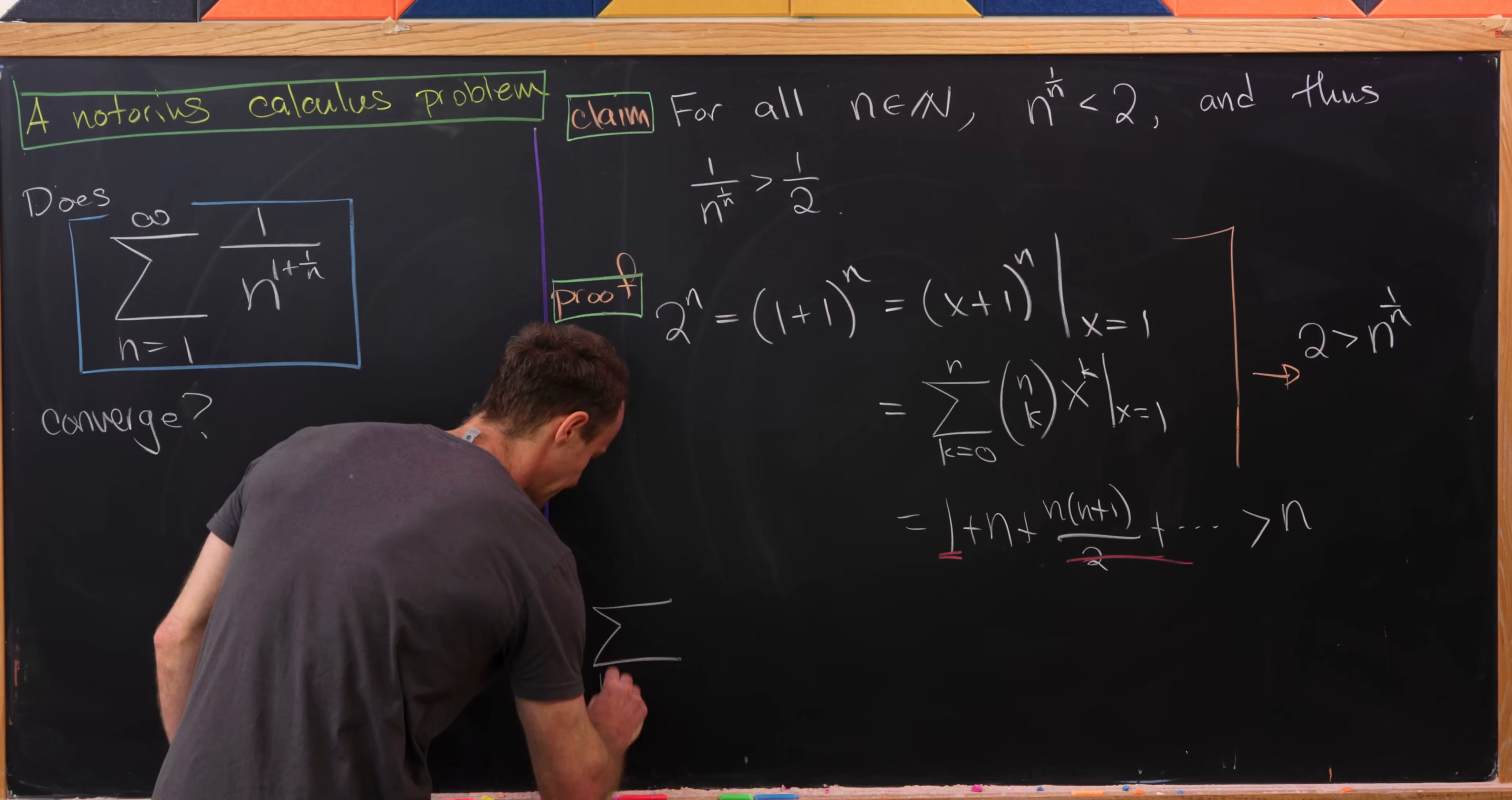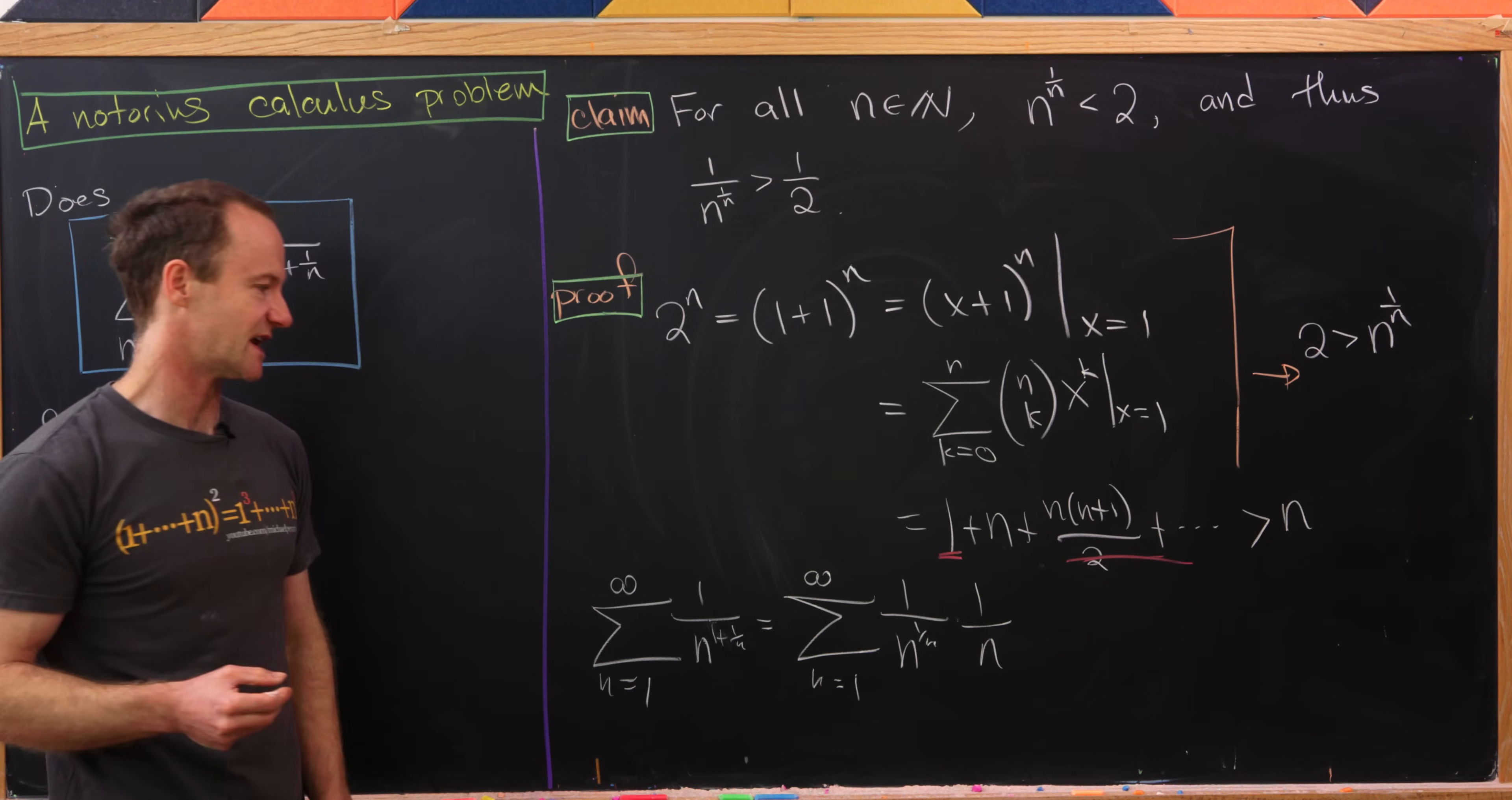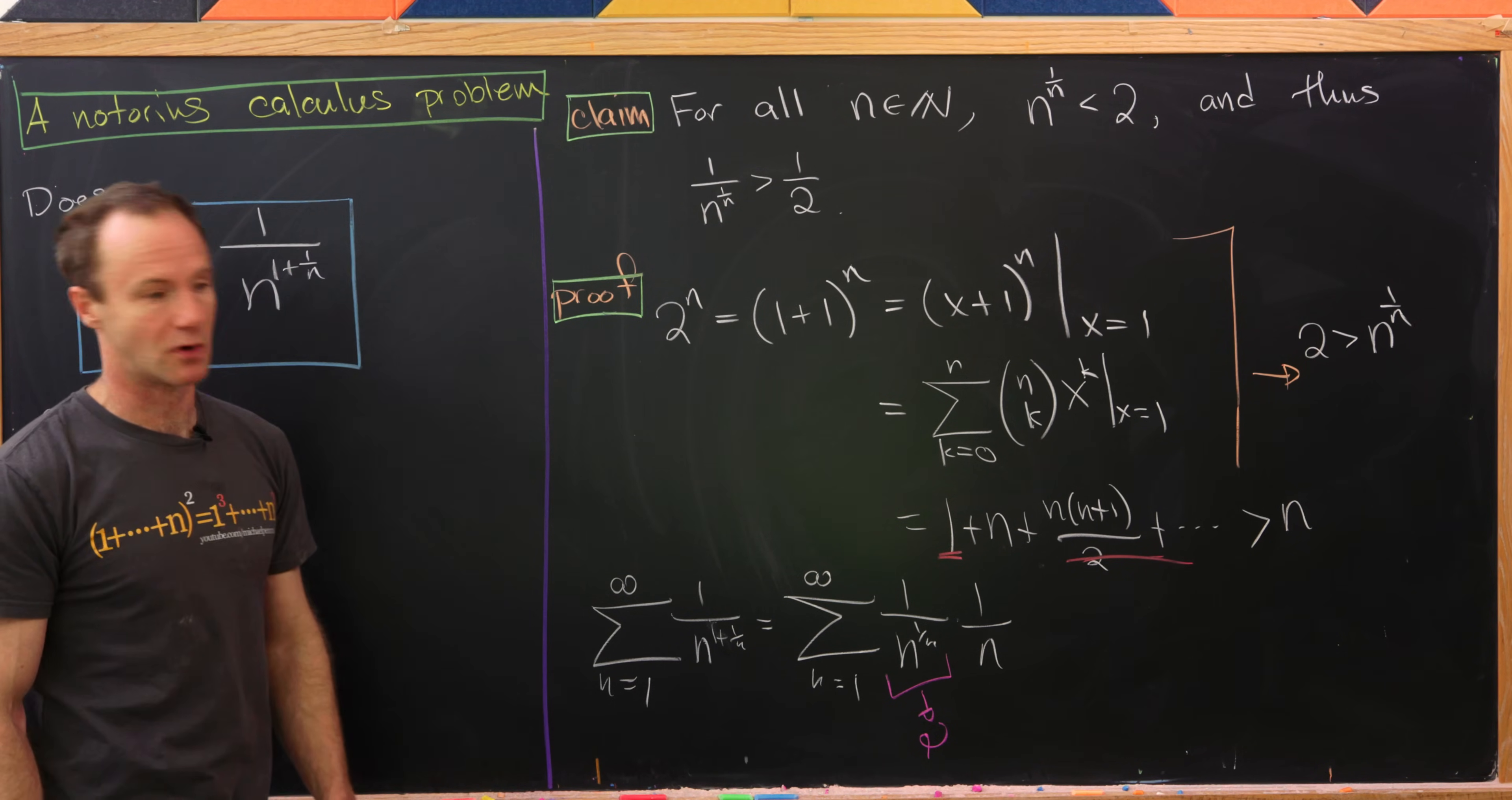So let's start with our sum as n goes from 1 to infinity of 1/n^(1+1/n), and then we'll rewrite this as the sum as n goes from 1 to infinity of 1/(n^(1/n) × n). Of course that's using exponent rules for multiplication when you have the same base. But now we'll use our claim and replace this with the number 2, building an inequality. So if we replace that thing in the denominator with the number 2, then I end up with something that will be smaller.